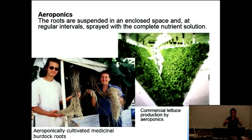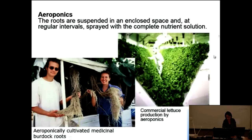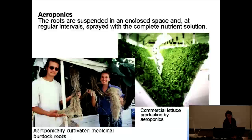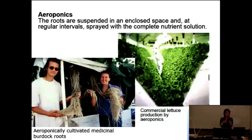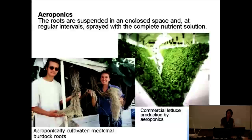Aeroponics is an innovative technology where the nutrient solution is sprayed onto the roots, which hang in the air. An A-frame structure holds the plants, with spraying nozzles inside. One research application was medicinal plant production where active compounds develop in the roots — harvesting roots from soil or substrate is tedious and messy. With aeroponics, roots grow in the air and nutrients are sprayed directly, making harvest easy. The program produced massive roots very successfully.